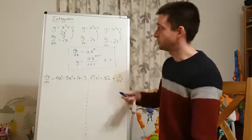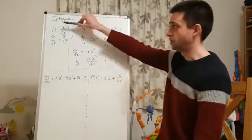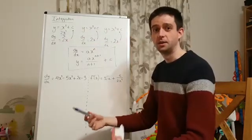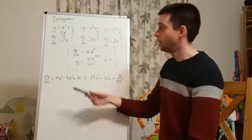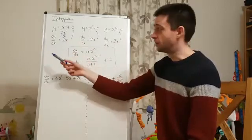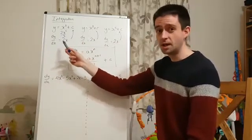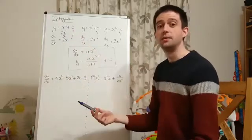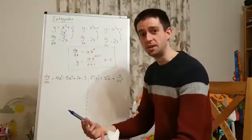What's the point of it? Well, if you think, why do we differentiate? We differentiate because it tells us the gradient function. It allows us to work out the gradient of the tangent at a point on the curve. Well, if we don't know the equation of the curve, but we know the equation of the gradient function, given certain information, we can use integration to find the equation of the original curve. That's where all this is leading.